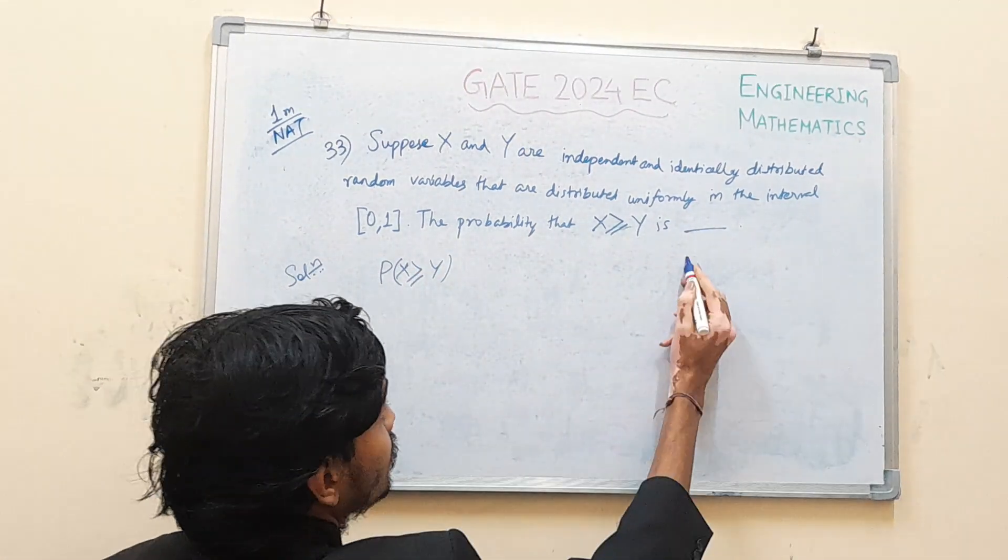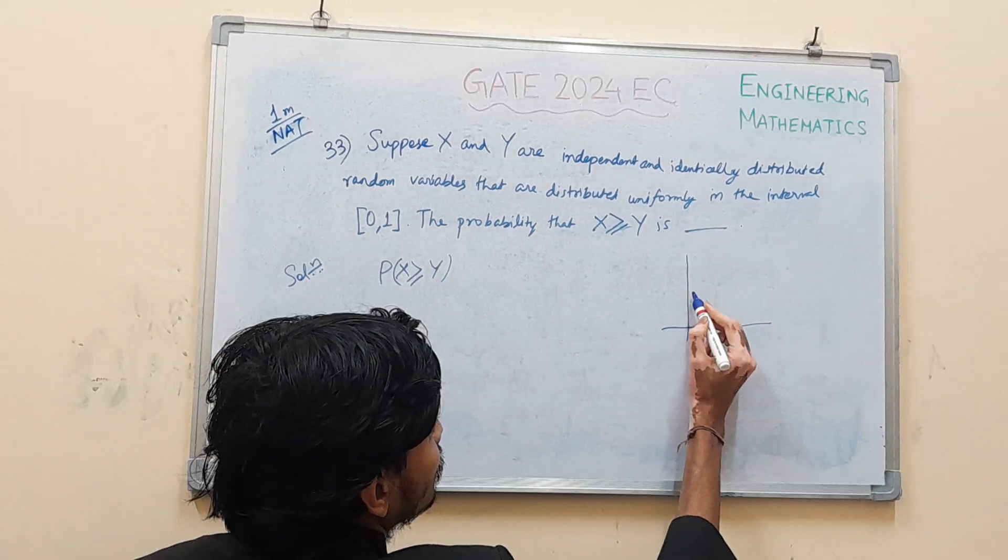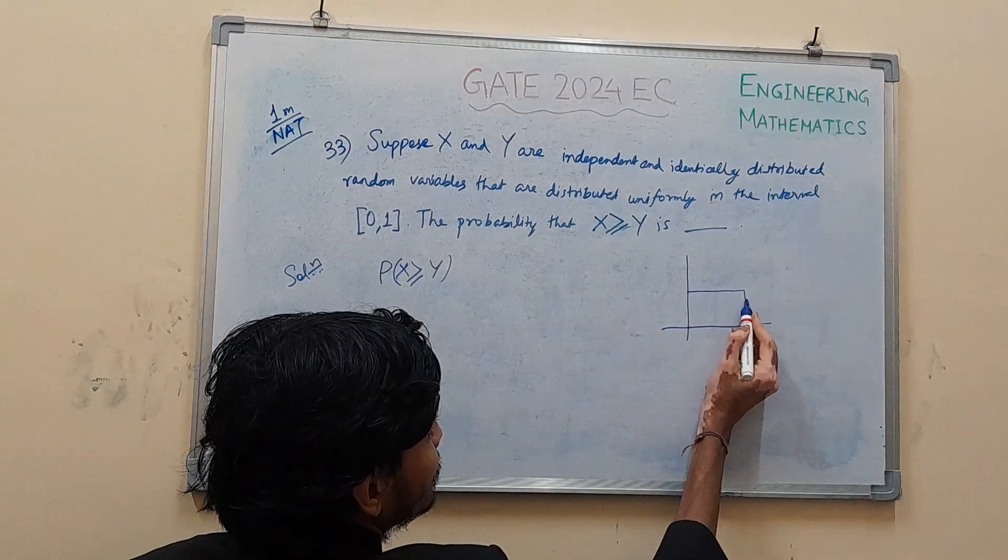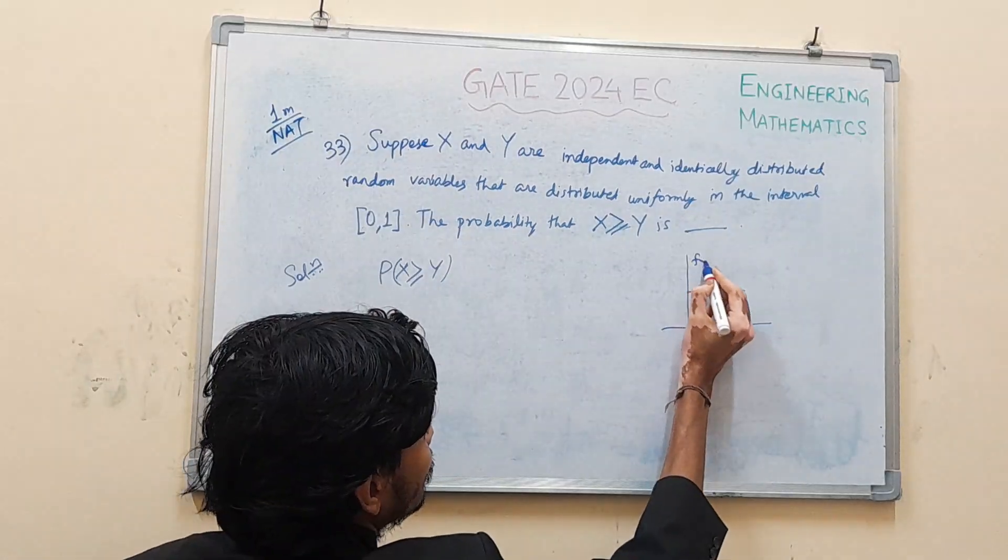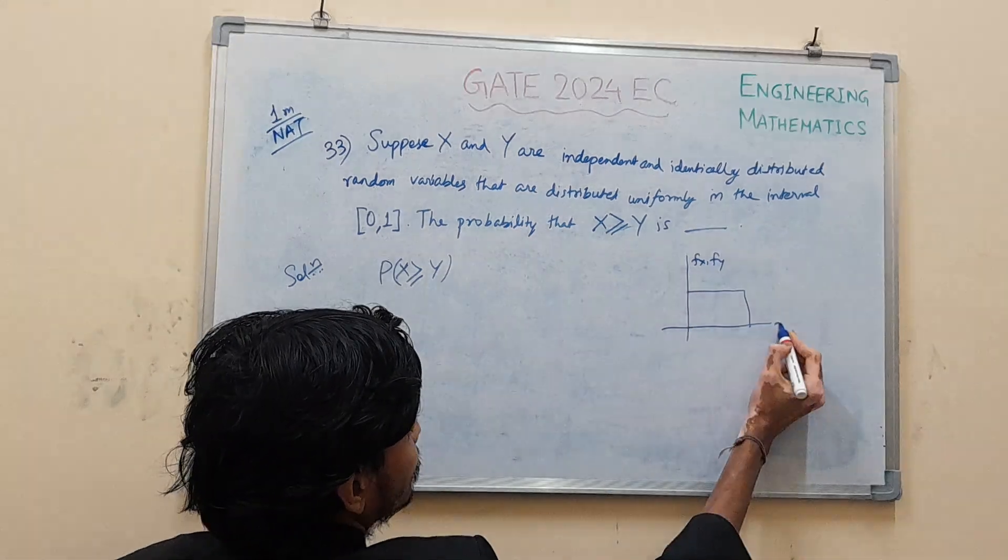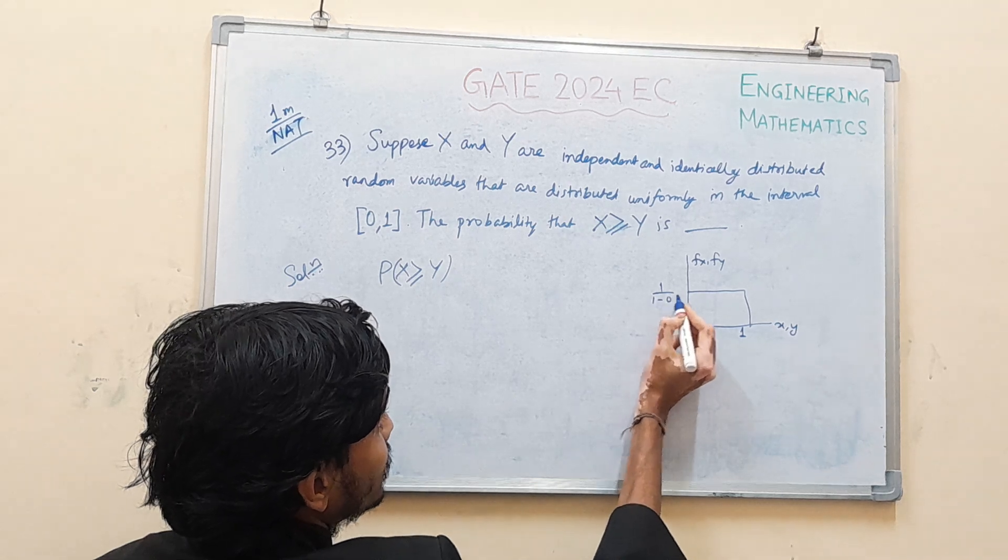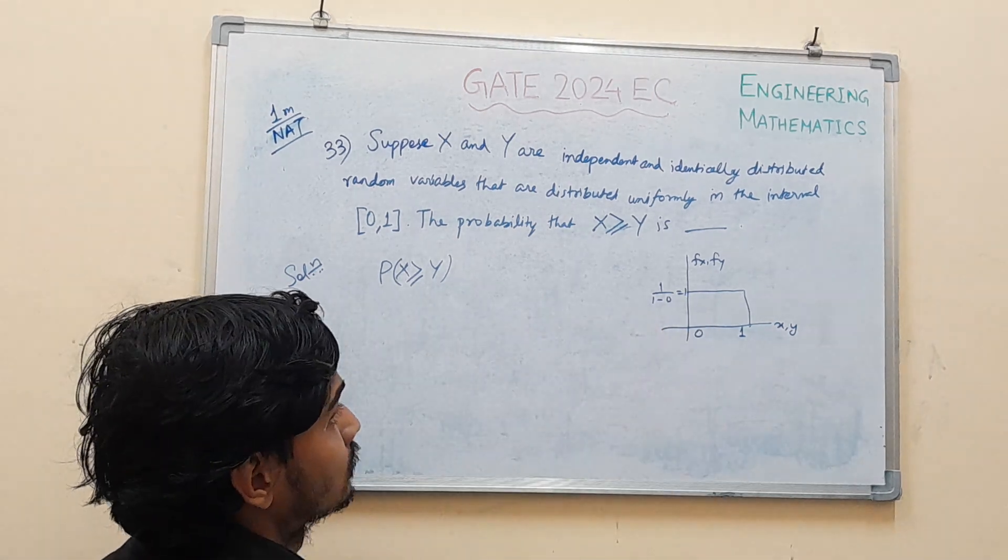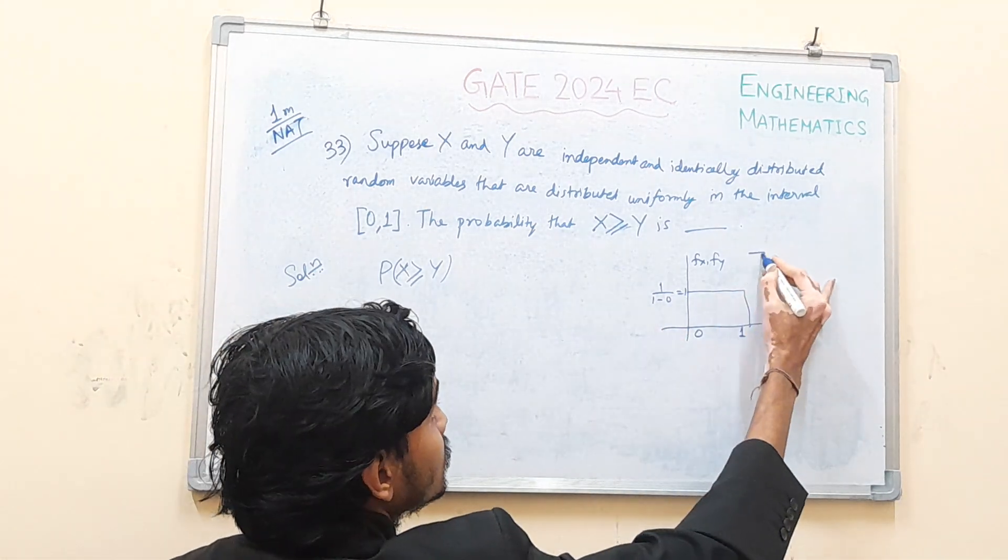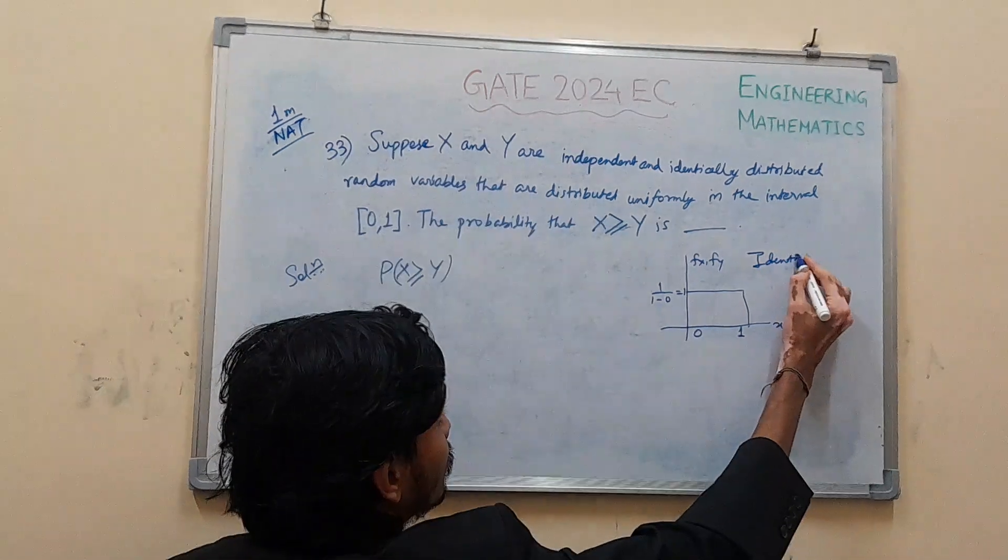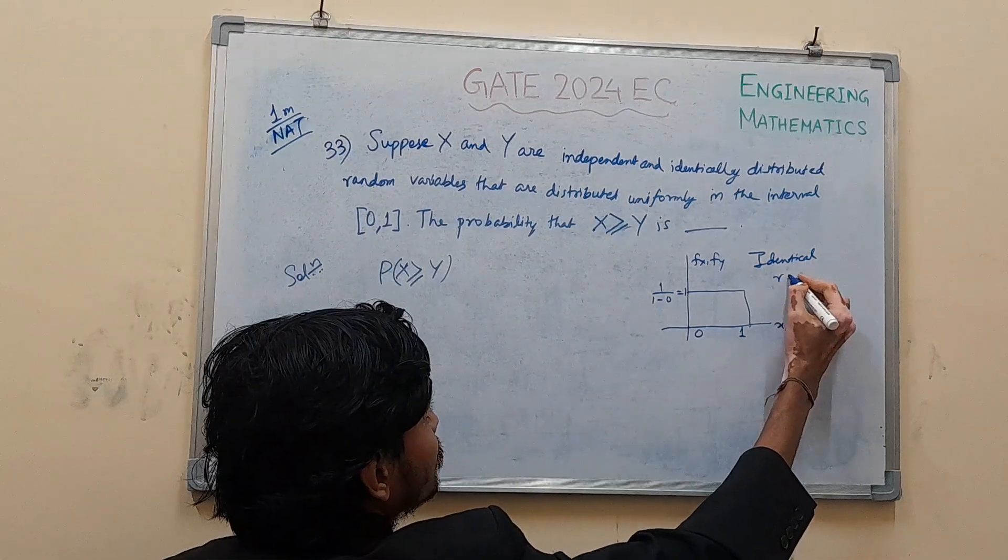So basically, X and Y are identically distributed random variables. The distribution will be between 0 and 1, probability of 1 by 1 minus 0, which is 1. Identically distributed random variables.